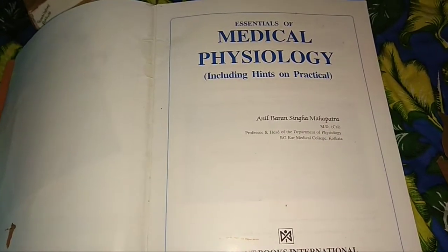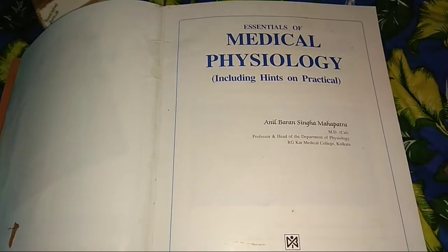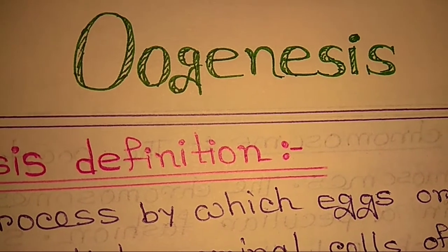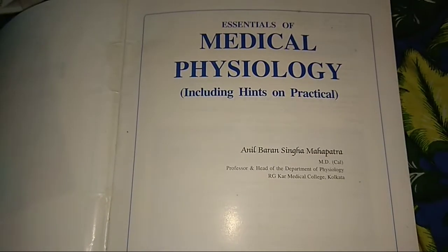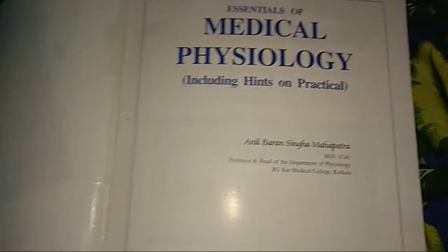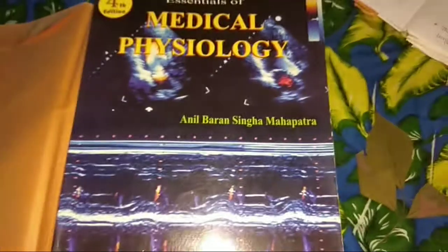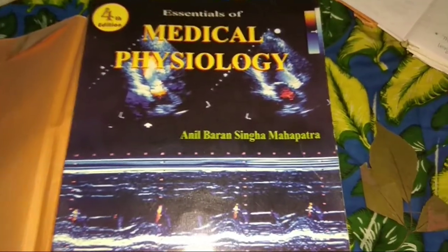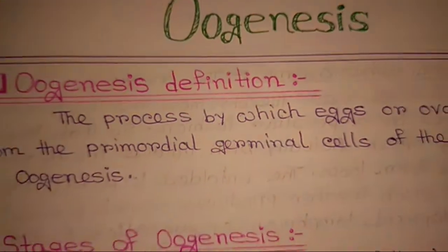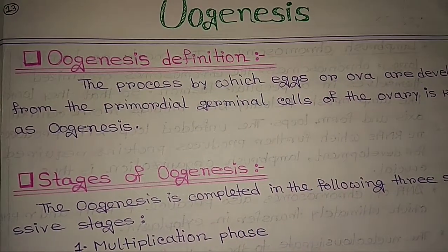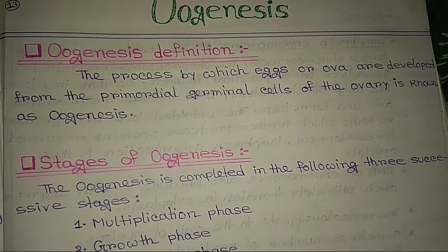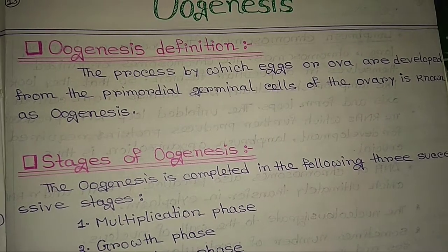Hello friends, welcome to my channel. Today I discussed about oogenesis. For this discussion I prefer Medical Physiology books by Anil Baran Singha Mahapatra. The process by which eggs or ova are developed from the primordial germinal cells of the ovary is known as oogenesis.